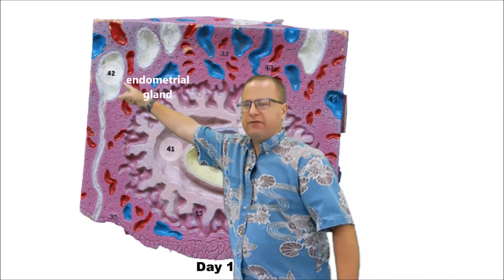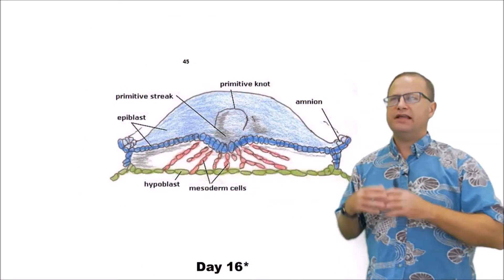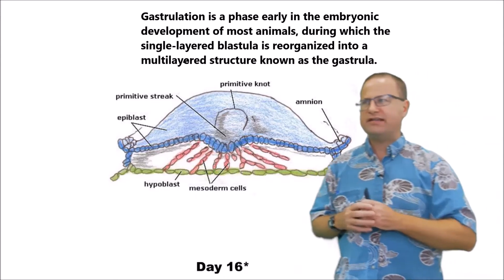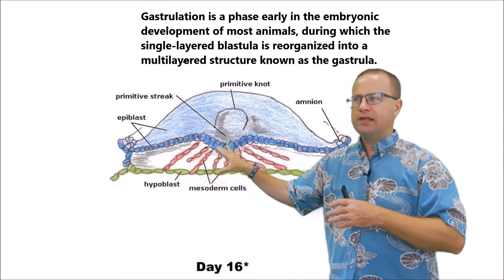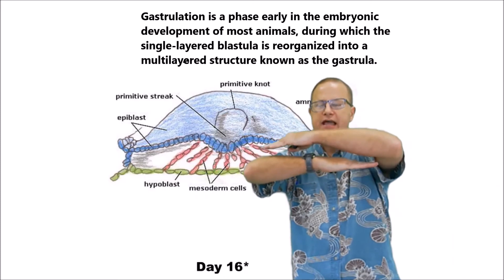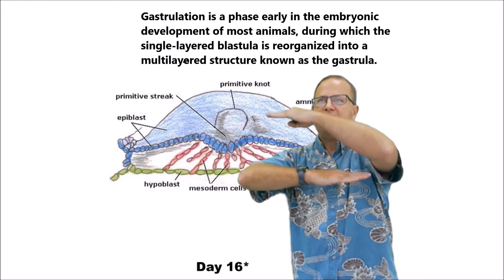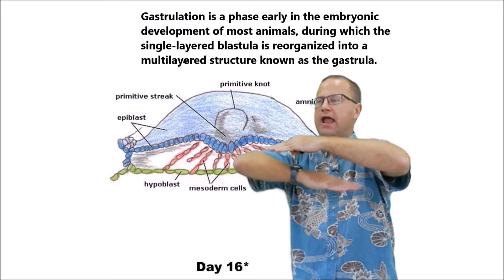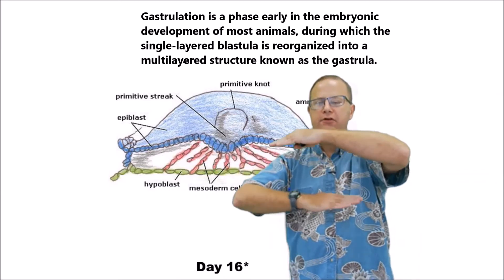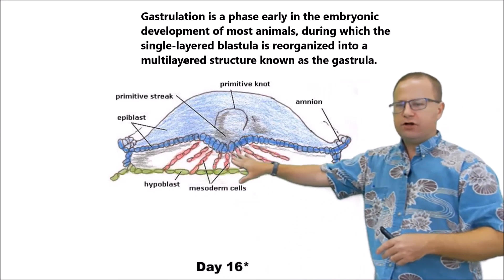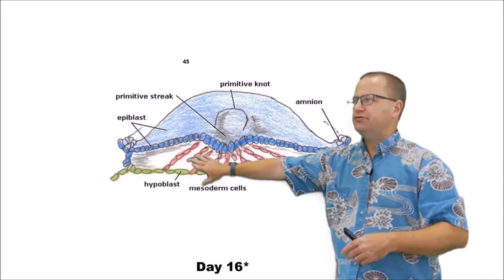Up here is also a very well-developed endometrial gland. The next process, which is really important, is something called gastrulation, and it happens right around day sixteen or so. Remember that embryonic disc had two layers: a top part called the epiblast and a bottom part called the hypoblast. The epiblast is going to go on to become ectoderm, and the hypoblast is going to go on to become endoderm. What happens during gastrulation is we form a third layer in between called mesoderm — a third embryonic tissue type, which is very important because it forms connective tissues, muscles, and bones.